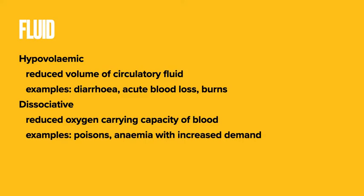The second type of shock is dissociative shock, where you have adequate volume but inadequate ability to carry oxygen to tissues. For example, this can be because of carbon monoxide poisoning, where the hemoglobin in the blood is saturated with carbon monoxide over oxygen, and therefore you're not able to get tissue perfusion. It can also occur with anemia when a patient with chronic anemia has an increased metabolic demand.